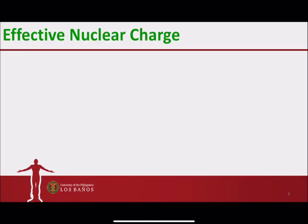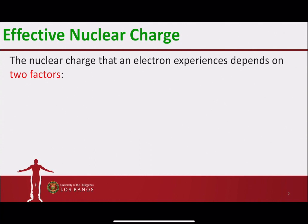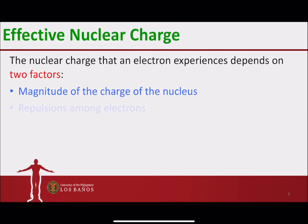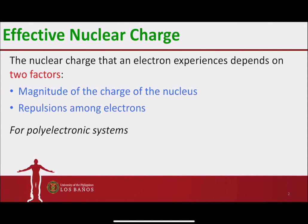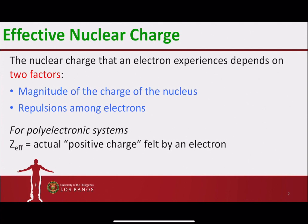For polyelectronic systems, we have encountered that shielding and penetration of electrons is very important. As such, the nuclear charge that the electron experiences in polyelectronic atoms depends on two factors: the magnitude of the charge of the nucleus — how large the value Z is — and the repulsion among the electrons. Of course, if there are more electrons, you should expect more repulsions. For polyelectronic systems, the nuclear charge felt by the electron is actually different from the Z value. This is why we refer to the nuclear charge as ZEFF, or effective nuclear charge, and this is the actual positive charge that is felt by an electron.